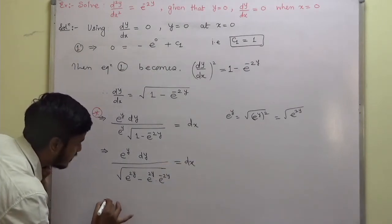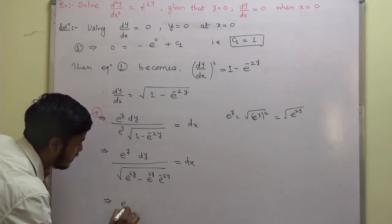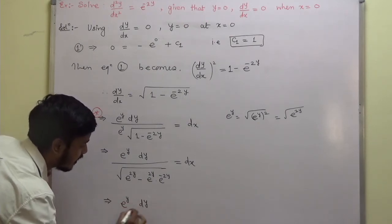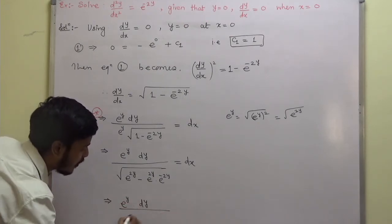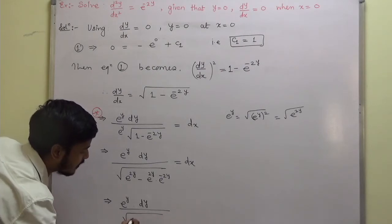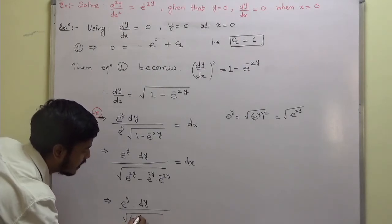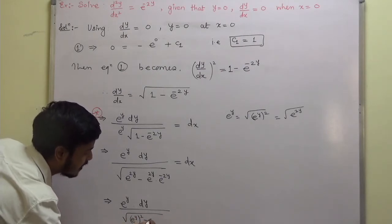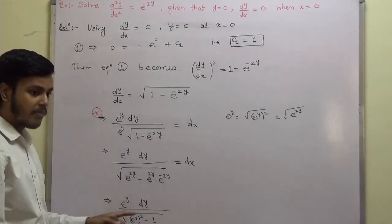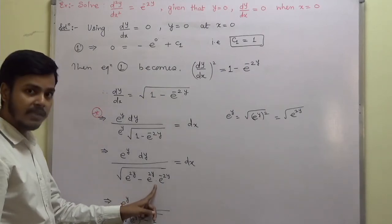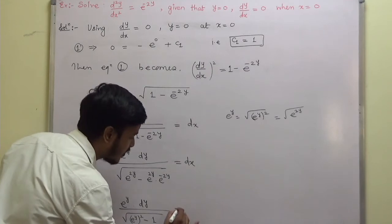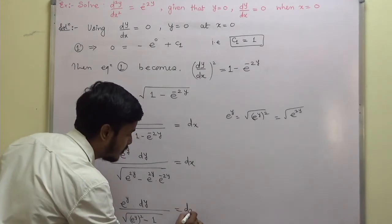This simplifies to e^y·dy / √((e^y)² − 1), because applying the law of indices, e^(2y)·e^(-2y) = e^0 = 1. This equals dx.